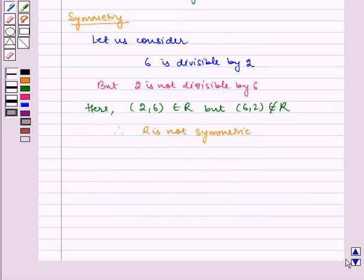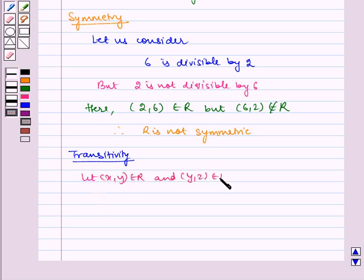Now let's check for transitivity. Let (x,y) belongs to R and (y,z) belongs to R, which implies y is divisible by x and z is divisible by y.